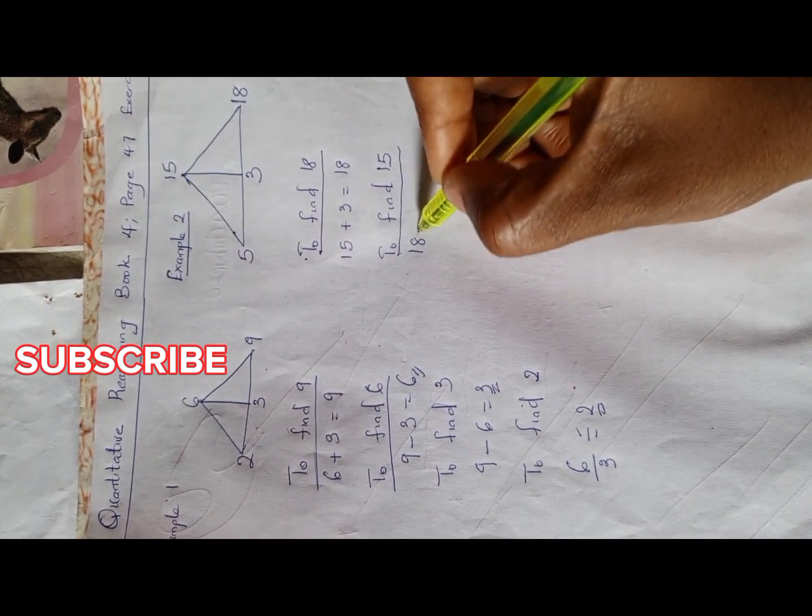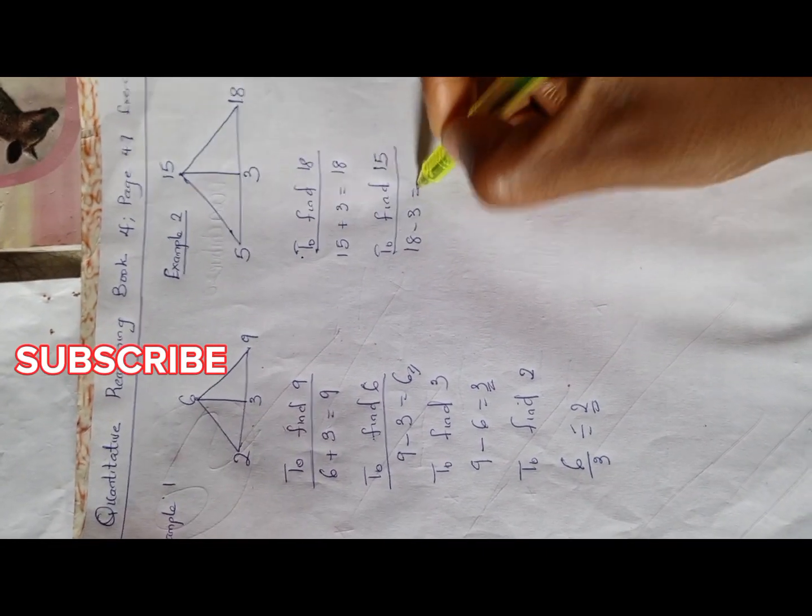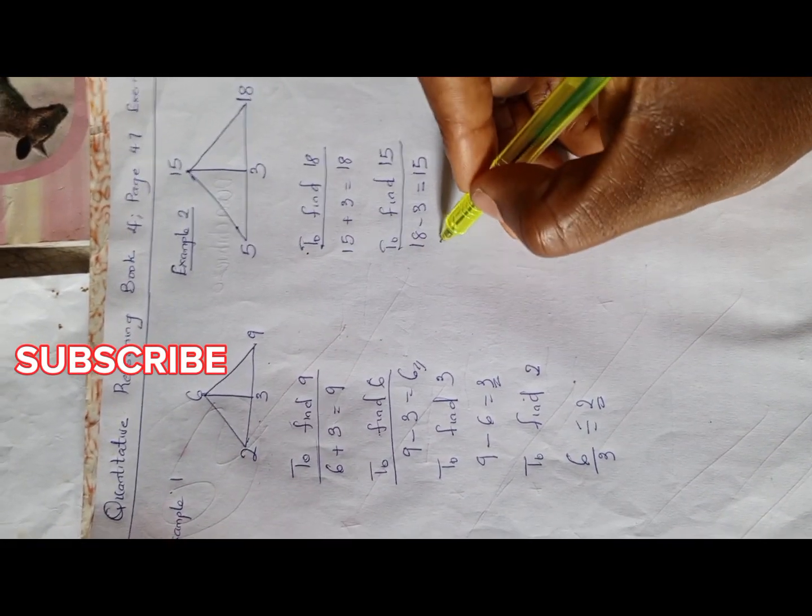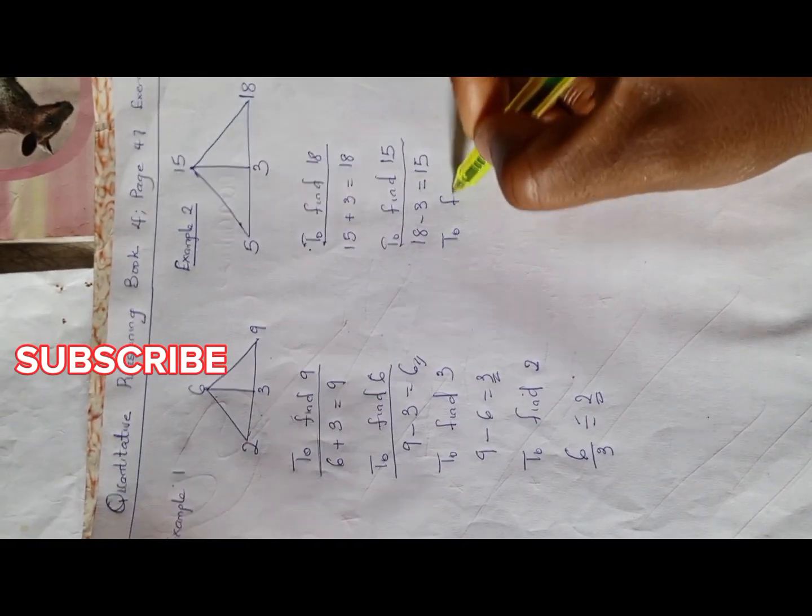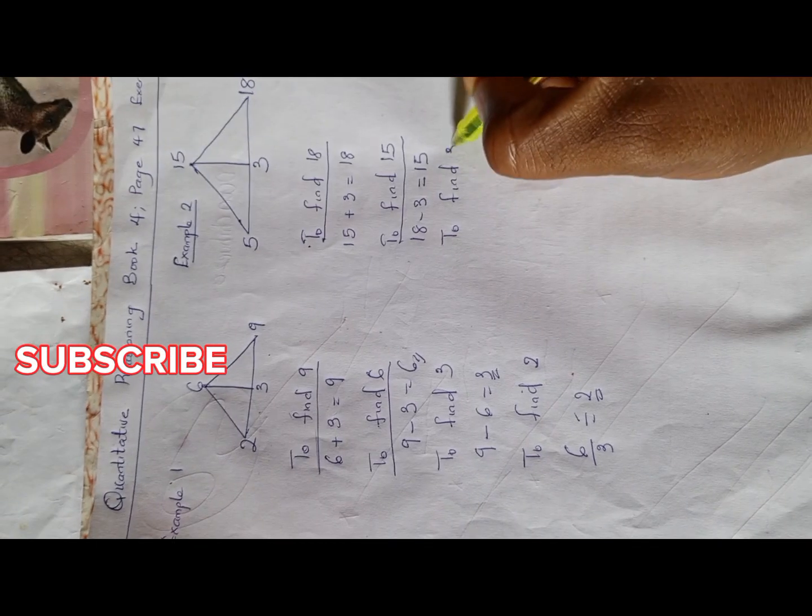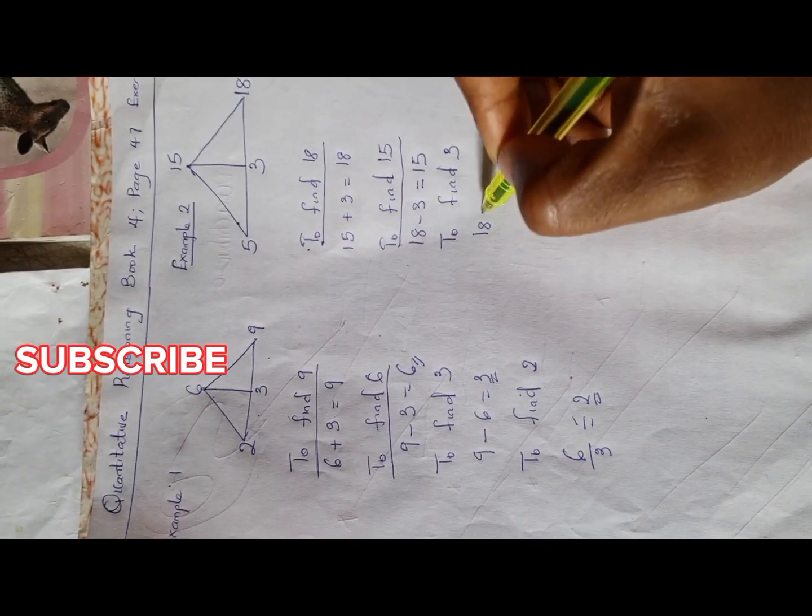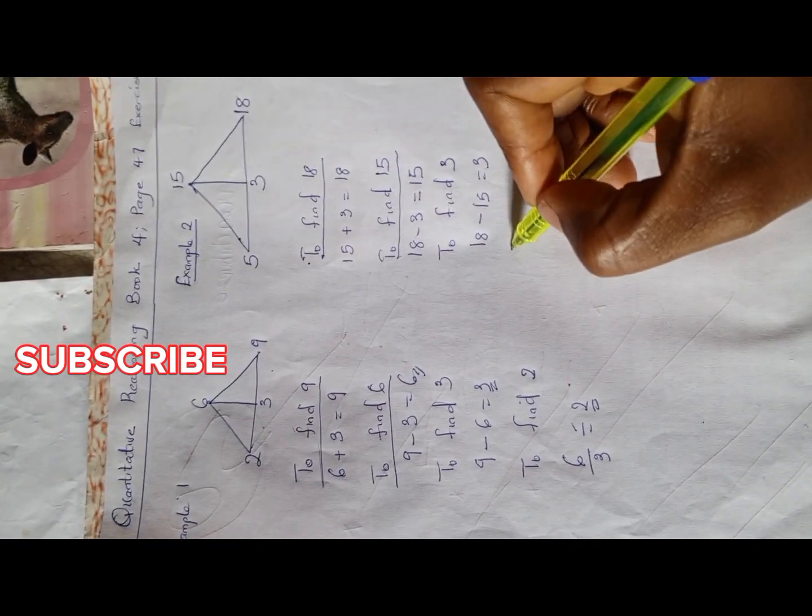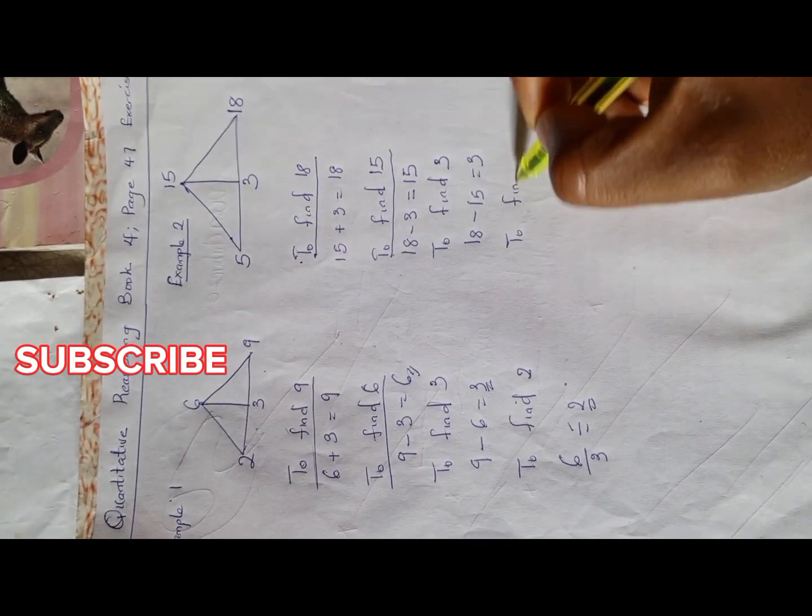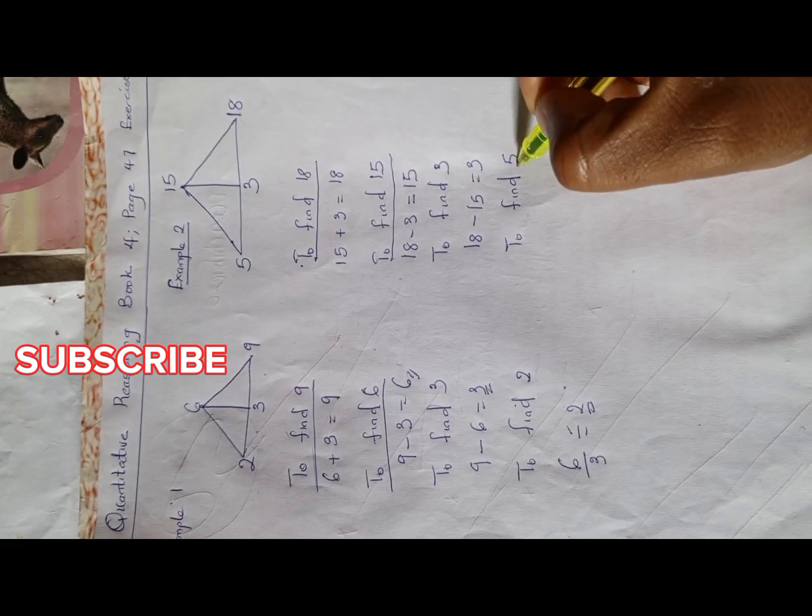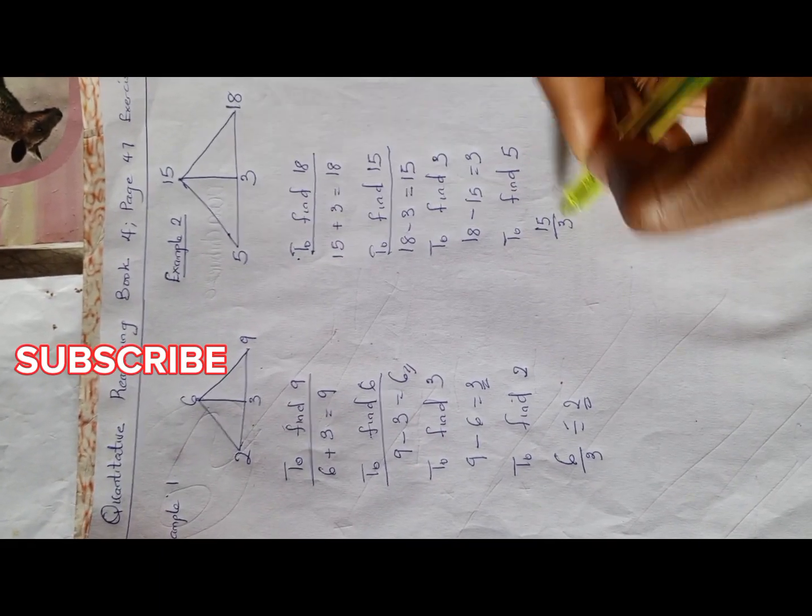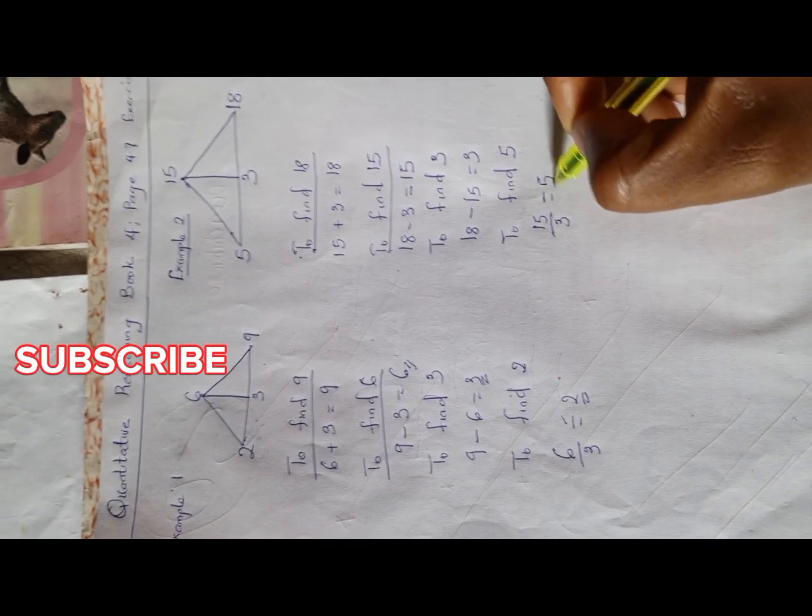Remember, addition is the direct opposite of subtraction. To find 3, you have 18 minus 15 is 3. And to find 5, we have 15 divided by 3 is 5.